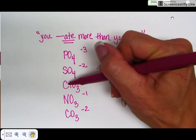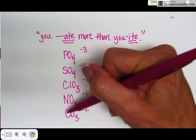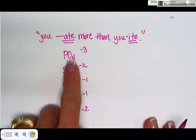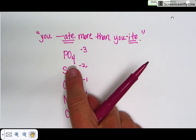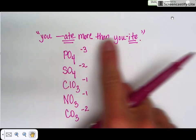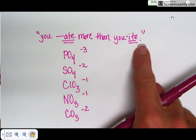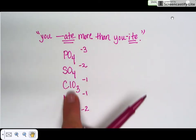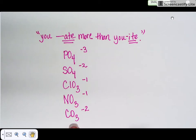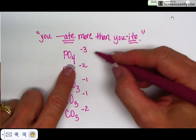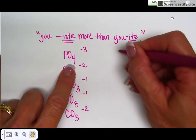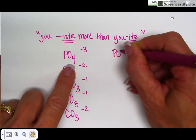Now you can tell from the other element what the other part of the name is. This contains phosphorus so phosphate, sulfur so sulfate, chlorine so chlorate, nitrate, carbonate. These have cousins if you want to think of them that way. They have a corresponding polyatomic ion that is similar but the formula is slightly different, so the name is different. 'You ate more than you -ite' means that the one that ends in -ate has one more oxygen in the formula than the one that ends in -ite.